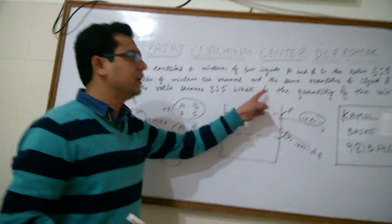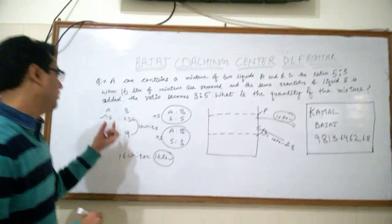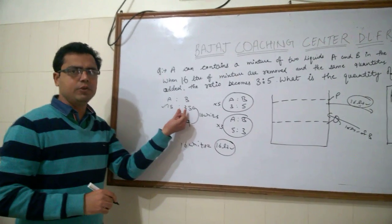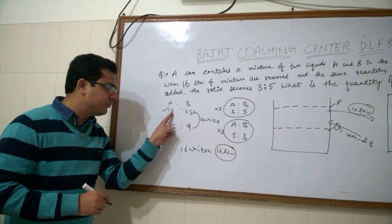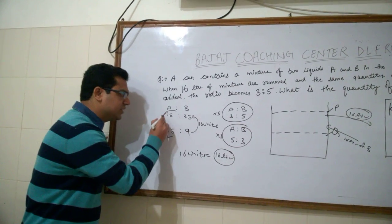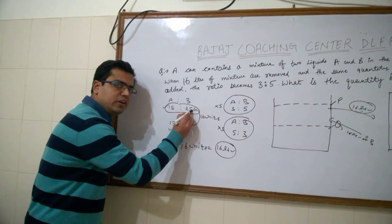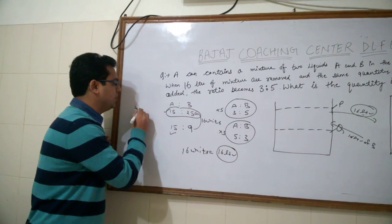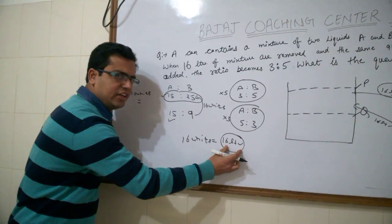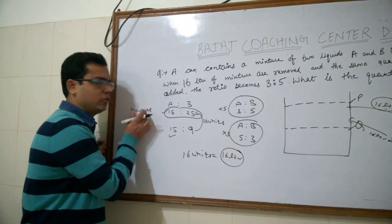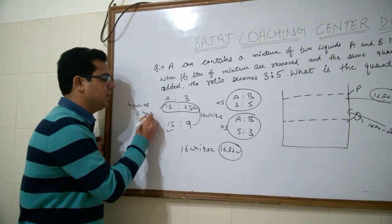The question is, what is the quantity of the mixture? Now, we will work on new ratio because we have formed new ratio. According to multipliers, the new ratio is 15 is to 25. The capacity is 15 plus 25, 40 units. If 16 units are corresponding to 16 litres, then 40 units are corresponding to 40 litres.